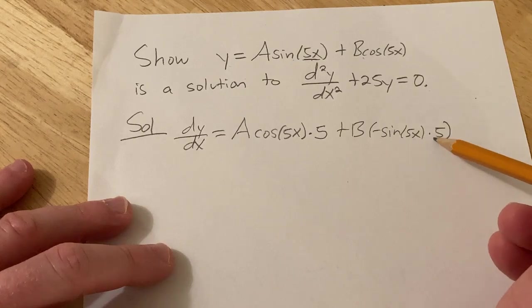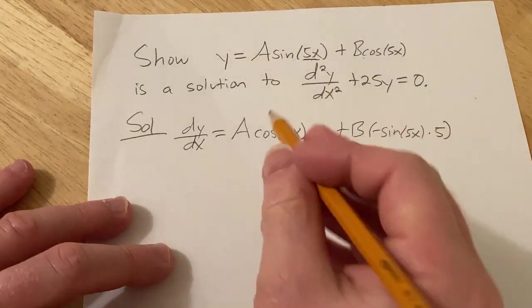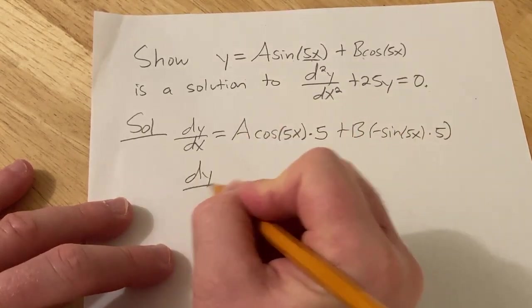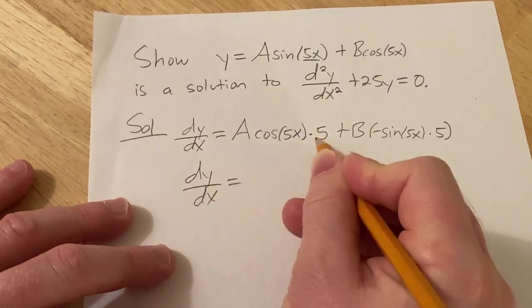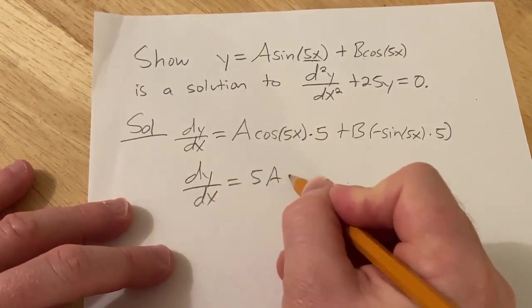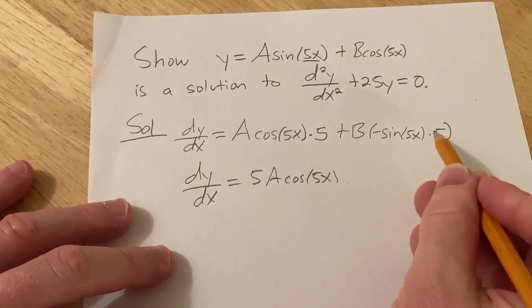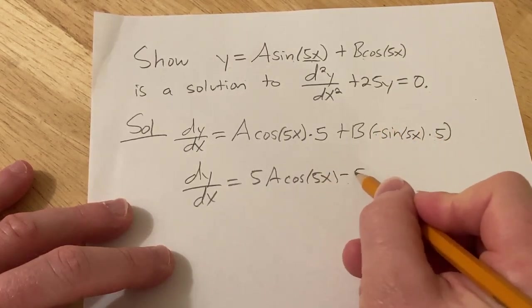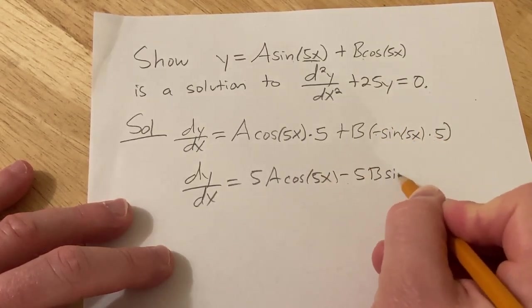You leave the inside untouched, and then you multiply by the derivative of the inside. So let me just clean this up. So dy/dx equals 5A cosine 5x, and then minus 5B sine 5x.